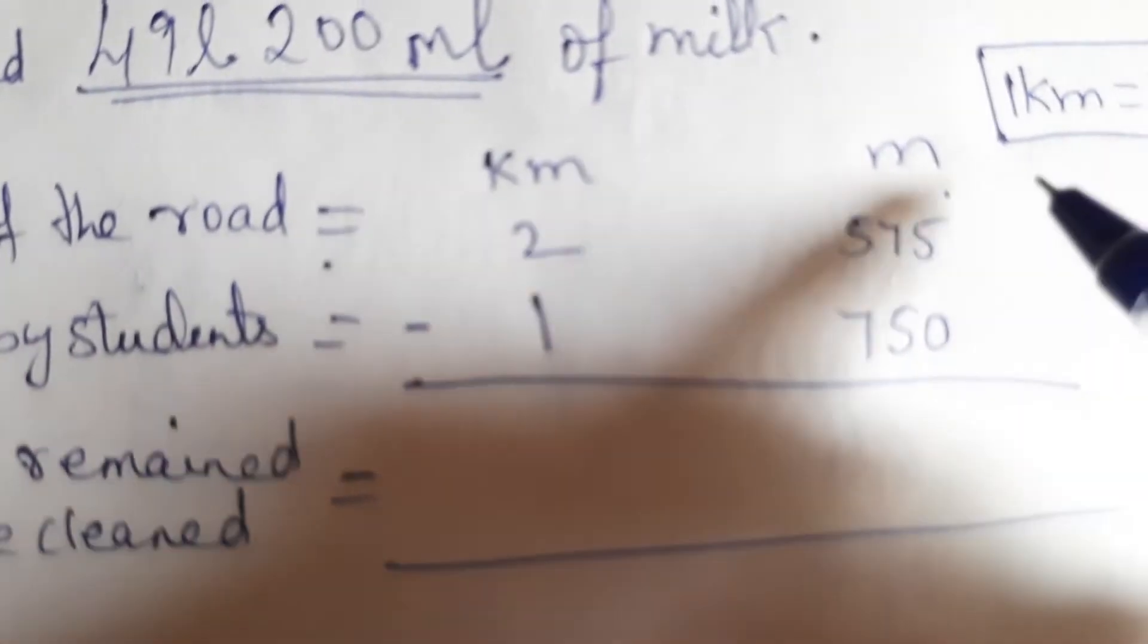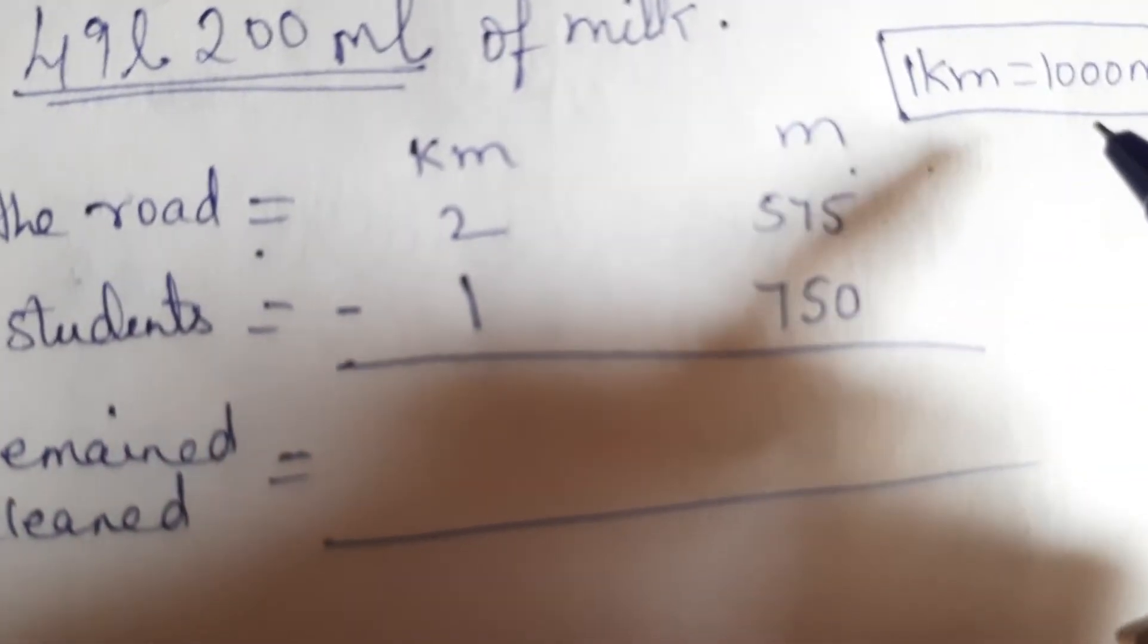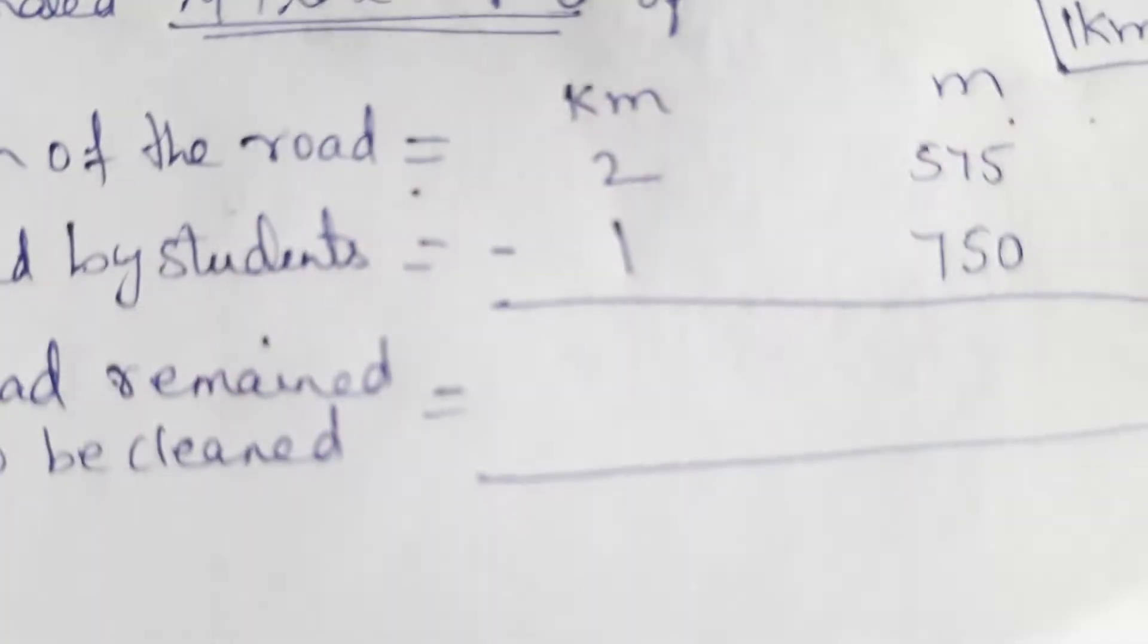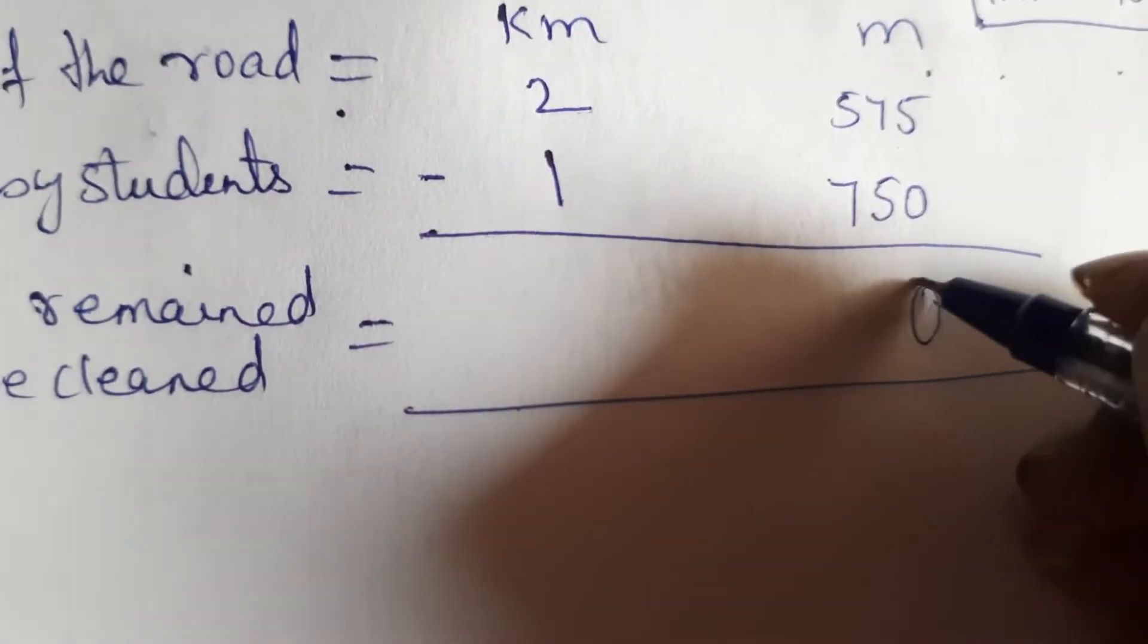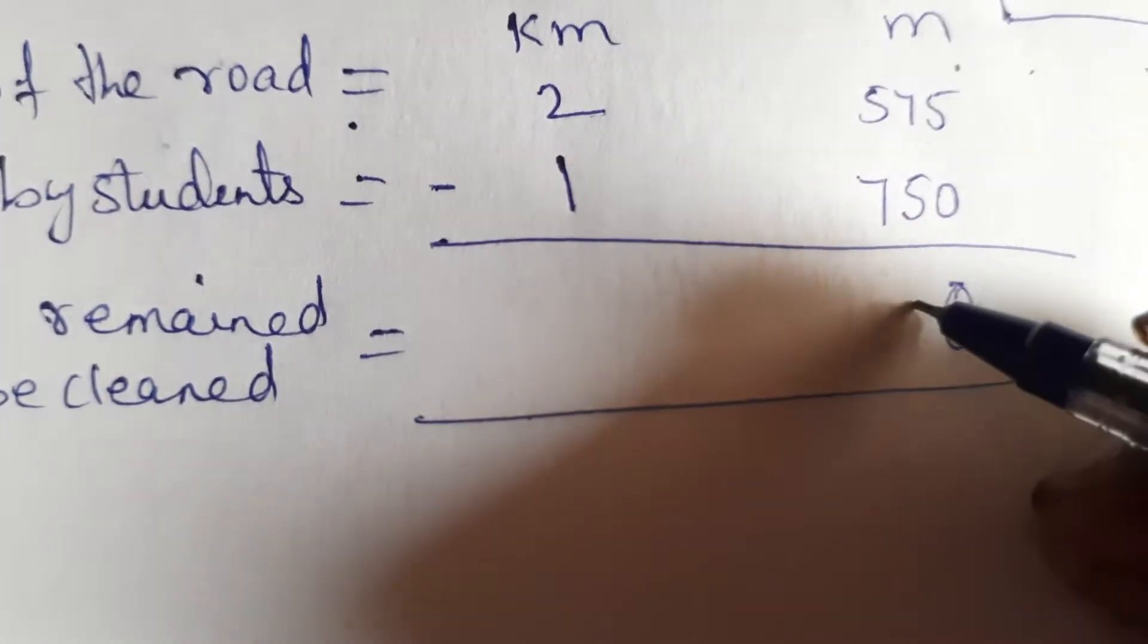So remember, do remember 1 kilometer is equal to 1000 meter. Okay. So let us minus it children. 5 minus 0 is 0. 7 minus 5 is 2.